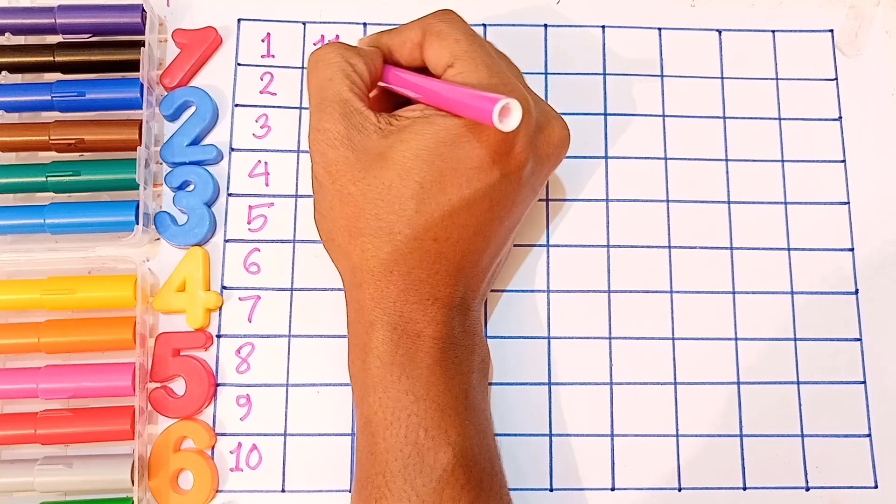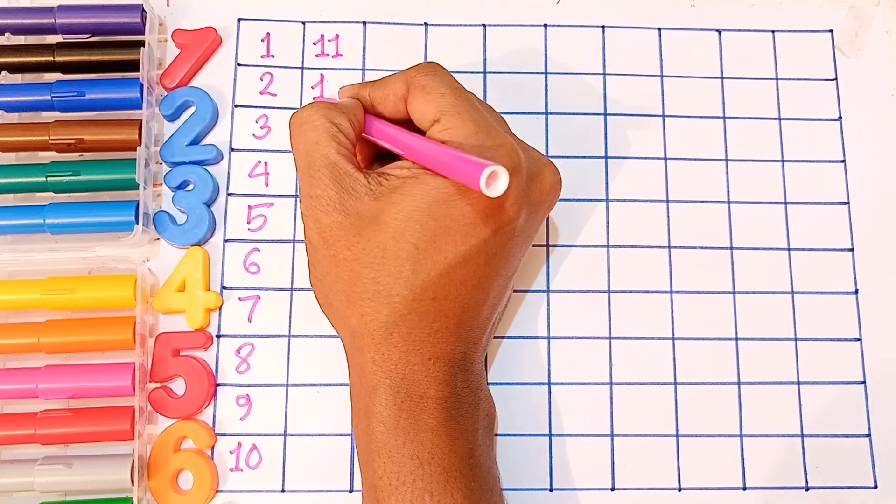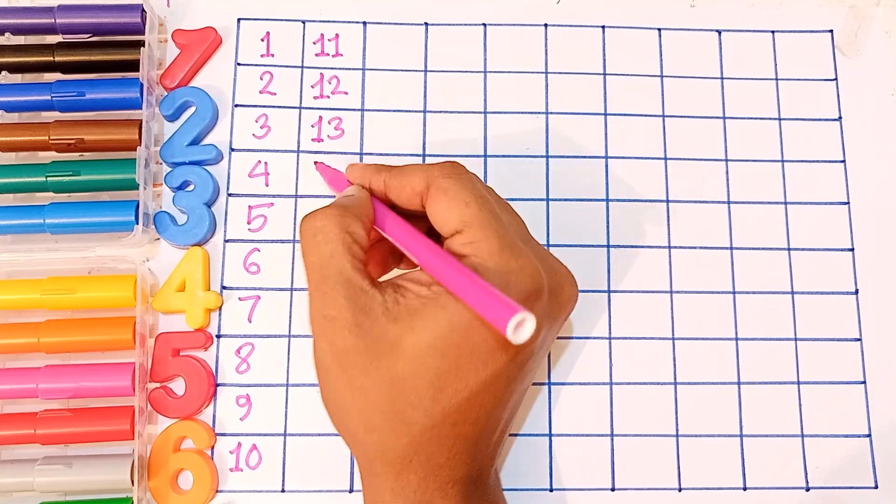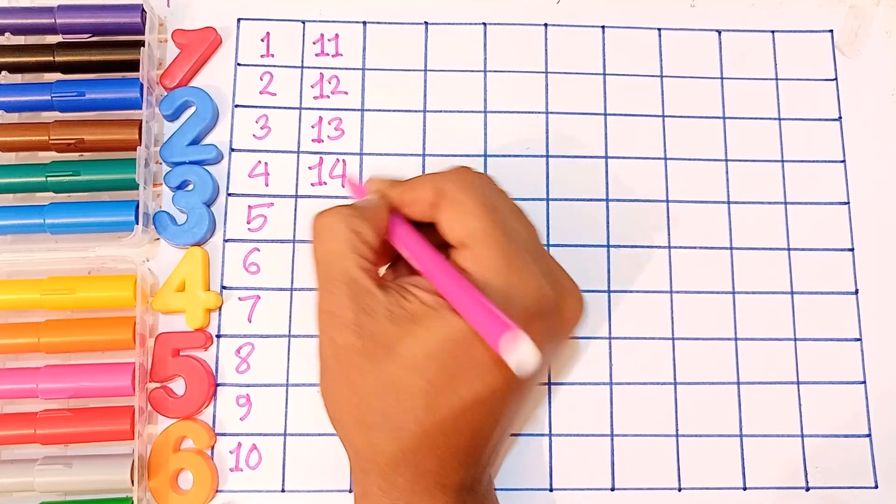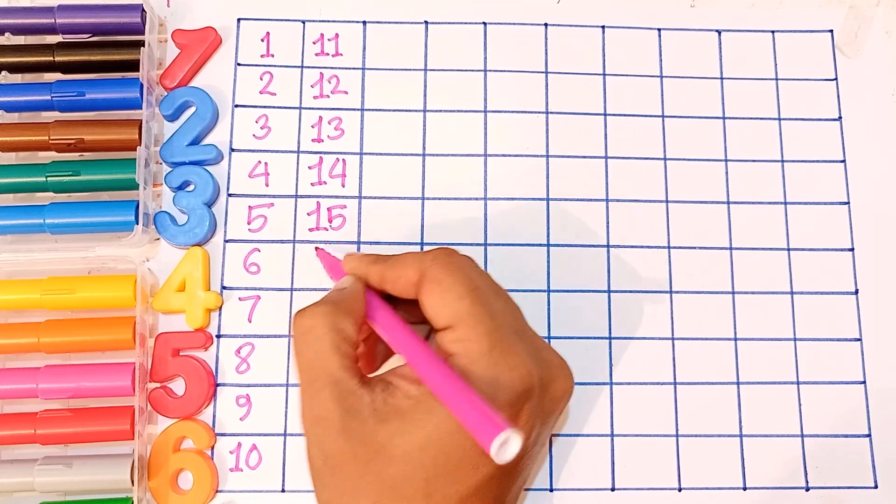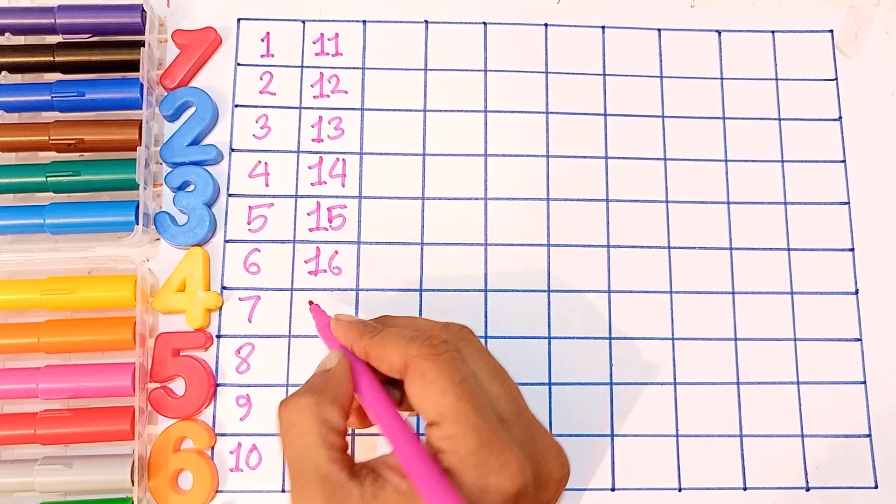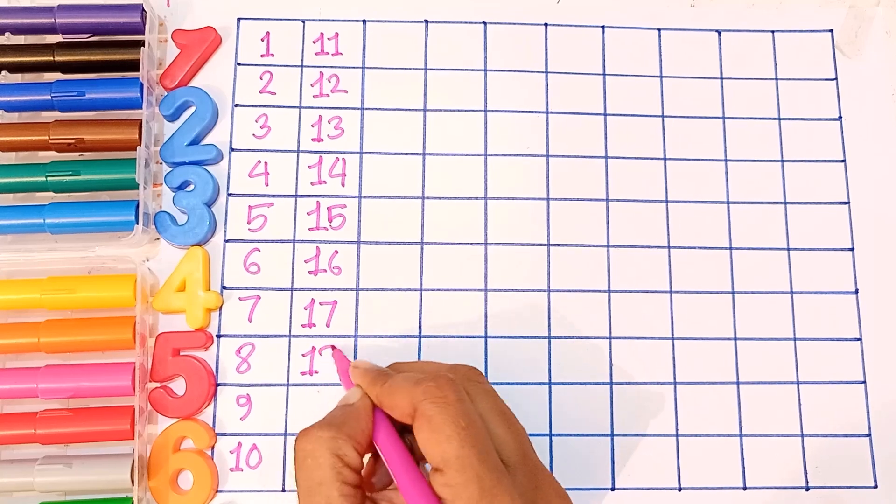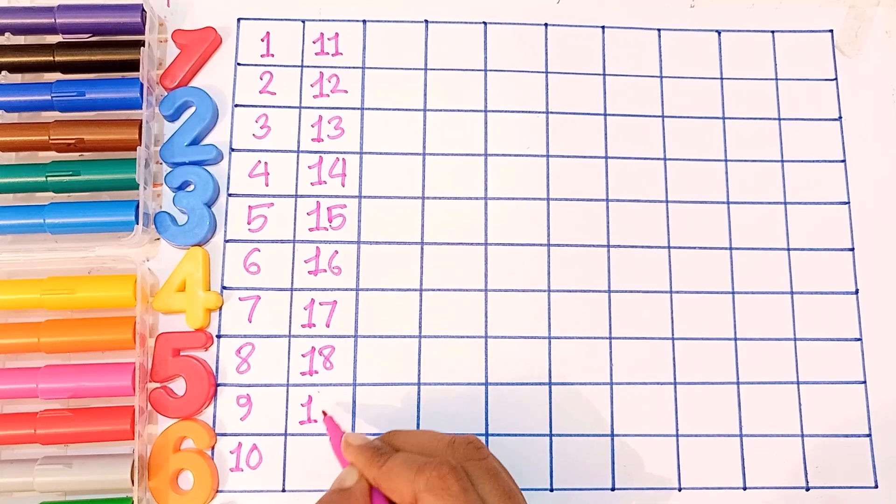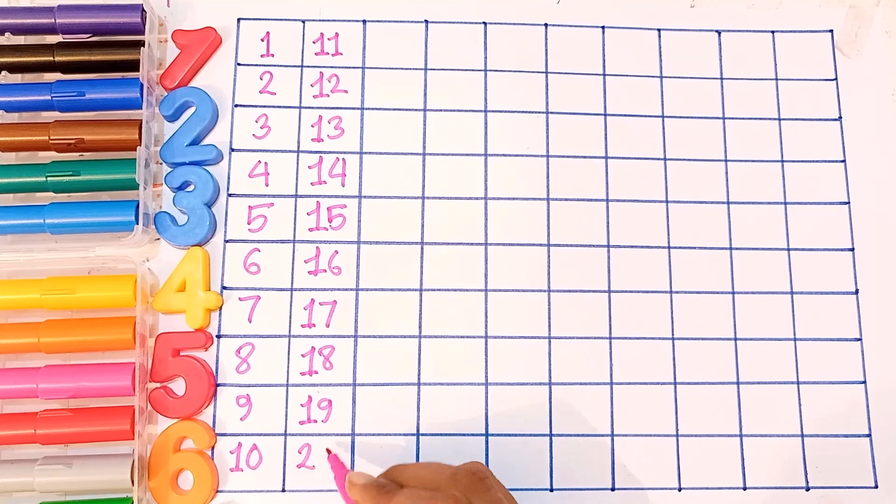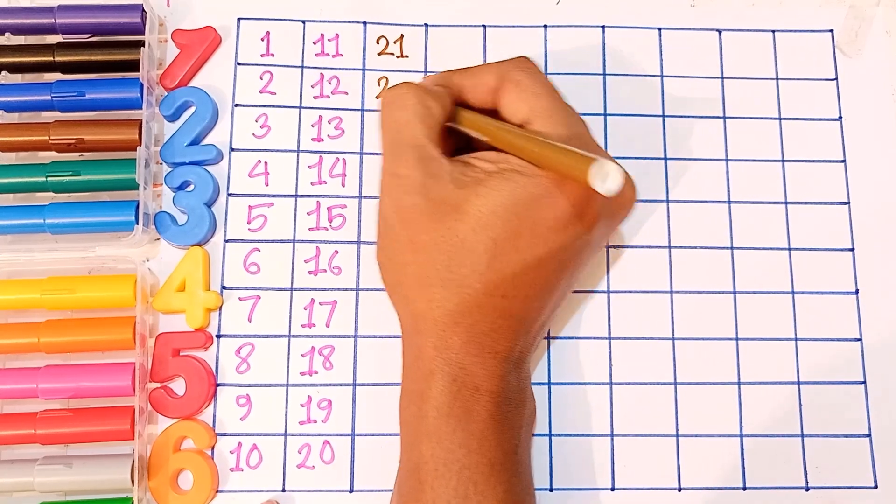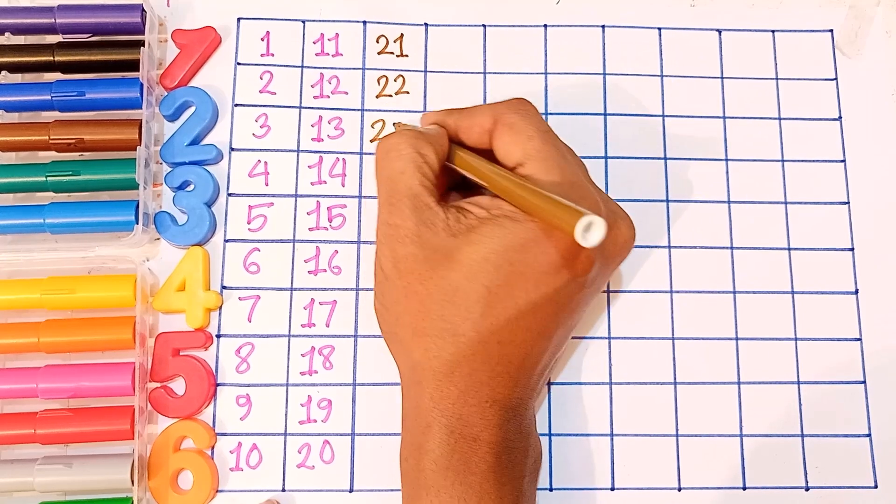One and one eleven, twelve, thirteen, fourteen, fifteen, sixteen, seventeen, eighteen, nineteen, twenty, twenty, twenty-one, twenty-two, twenty-three.